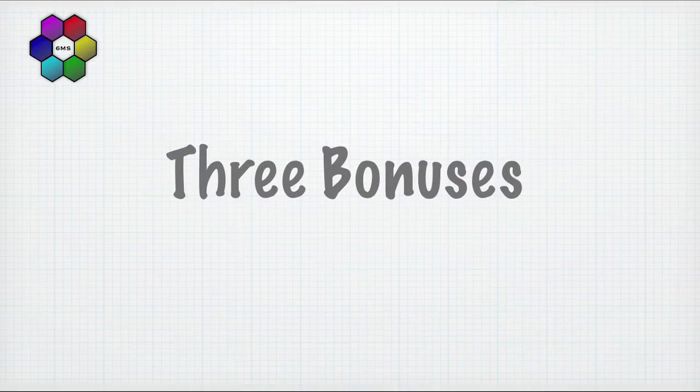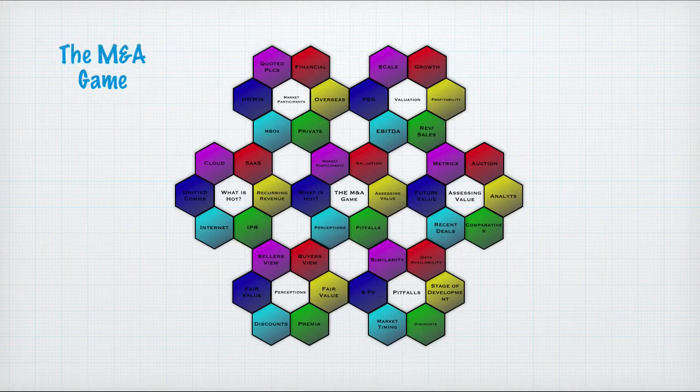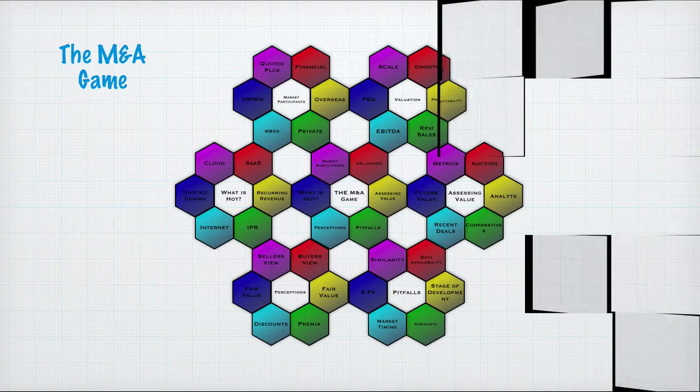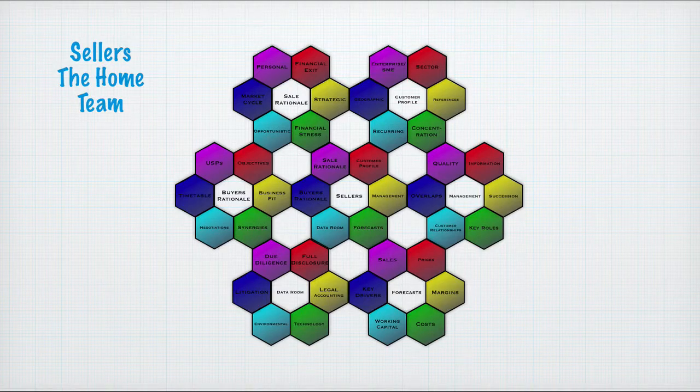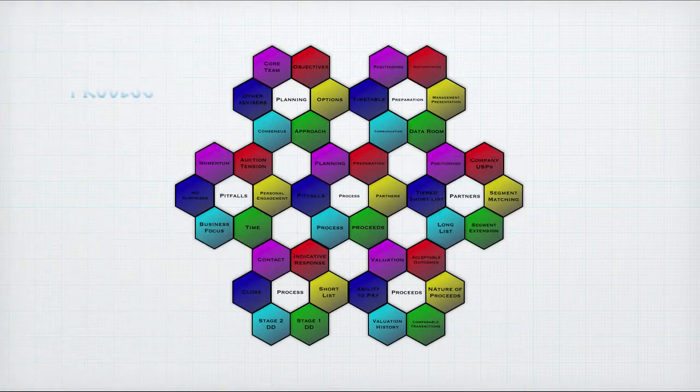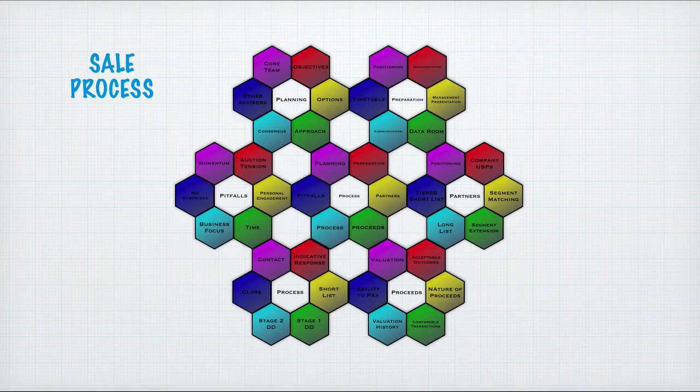Now in addition to that, I have three bonuses for you which will be available in the forms of PDFs. The first will be a magic hexagon nested structure showing the overview of the M&A game from lecture one. The second will be the magic hexagon lattice for the seller's lecture from lecture two. And the third is the sale process broken down into the same approach, this nested hexagon structure, so you can see how it all fits together.